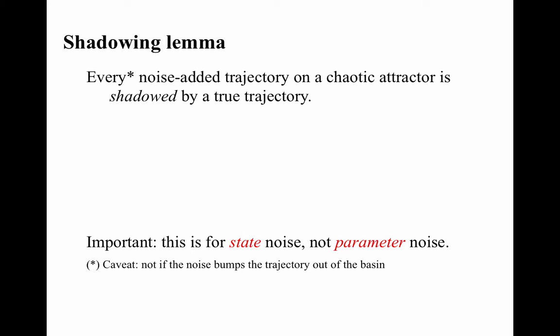But there's an important caveat here: unless the noise is big enough to bounce you out of the basin of attraction of the attractor, if that's true, this doesn't hold. And the shadowing lemma does not hold if there's noise in the parameters, like the R in the Lorenz system. It only holds if there's noise in the state variables.